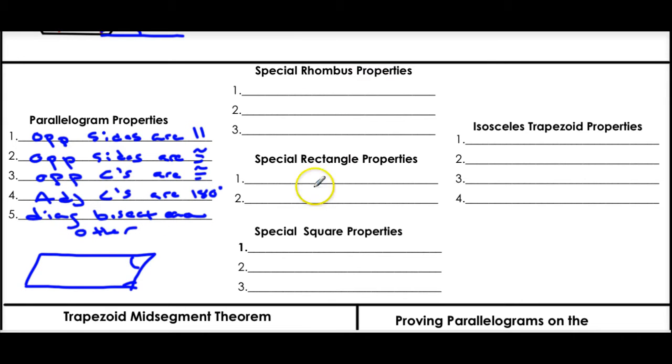So now, a rhombus, a rectangle, a square, these are all parallelograms. So they have all of these properties still. So each one of these shares all of these properties, and then they have special ones. The special rhombus properties are all sides are congruent. The diagonals are perpendicular, and the diagonals bisect the angles.